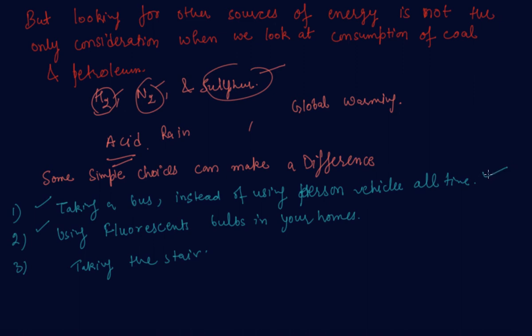Using bulbs whenever they are necessary or switch off the bulbs when not in use. Taking the stairs instead of taking the lifts. These are some choices you can make on your own to save our natural resources like coal and petroleum. When you use the lift, electricity is needed, and coal is used a lot when we generate electricity.